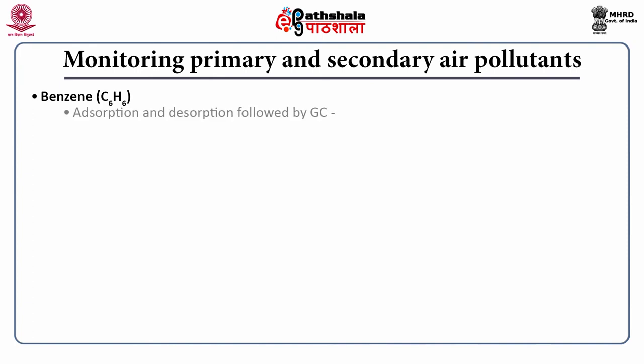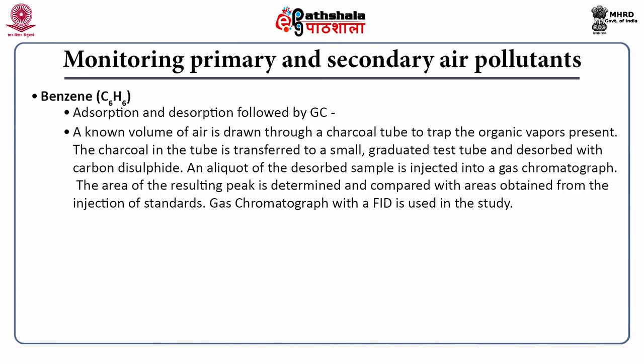Benzene is measured by adsorption and desorption followed by gas chromatography. A known volume of air is drawn through a charcoal tube to trap organic vapors. The charcoal is transferred to a small graduated test tube and dissolved with carbon disulfide. An aliquot of the dissolved sample is injected into a gas chromatograph; the area of the resulting peak is compared with areas from standard injections. A gas chromatograph with FID is used.